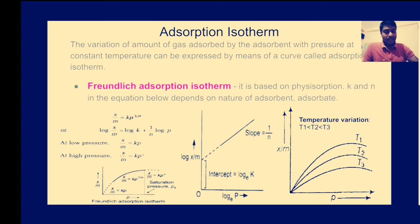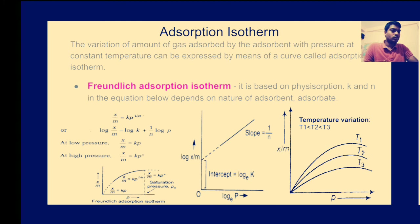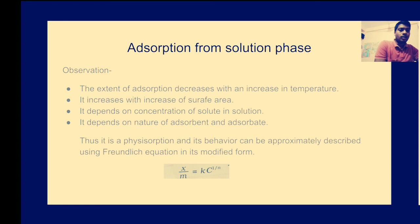When varying temperature, since the Freundlich isotherm is based on physisorption, adsorption decreases with increasing temperature. In the plot showing curves at temperatures T1, T2, T3, the curve at the bottom corresponds to the highest temperature T3, since higher temperature gives lower physisorption.